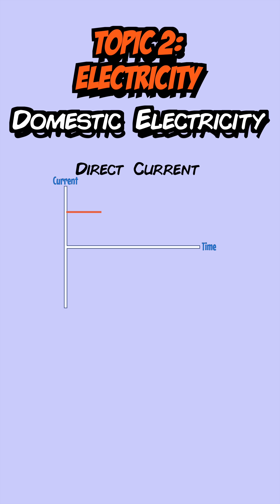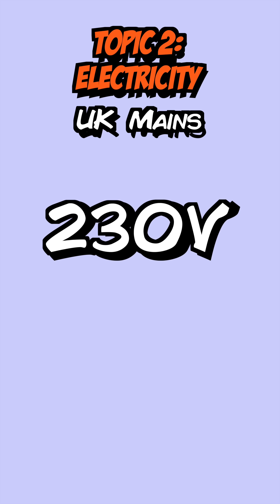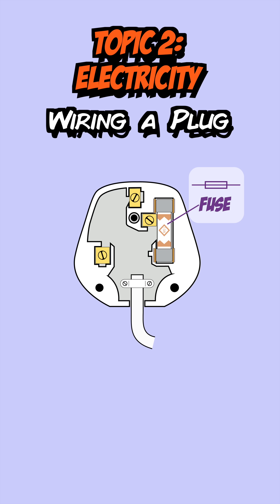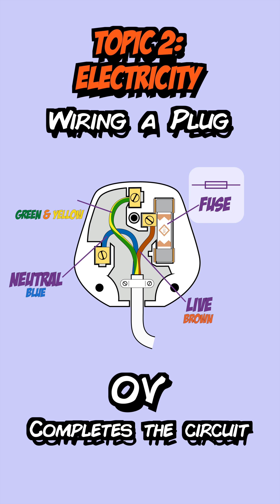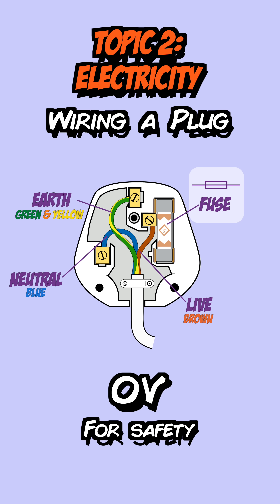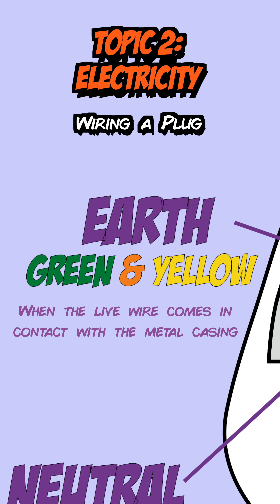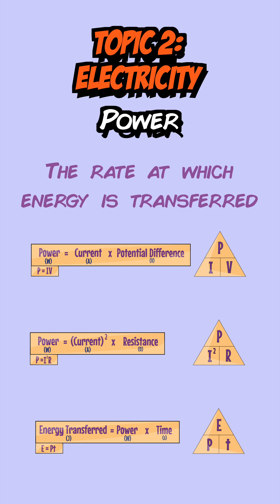For domestic electricity, you need to know the differences between direct current, which flows in one direction, and alternating current, which always changes in direction. Alternating current is used in the UK mains supply, which is 230 volts and 50 hertz. The plugs used in mains electricity contain a three-core cable made up of a brown live wire carrying 230 volts, a blue neutral wire which completes the circuit, and a green and yellow earth wire which is for safety. The earth wire is used when there's a fault where the live wire comes into contact with the metal casing of an appliance.